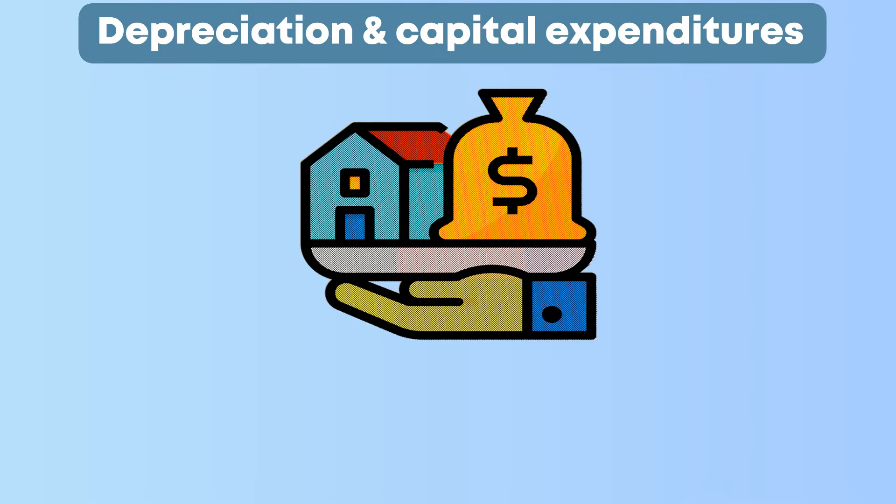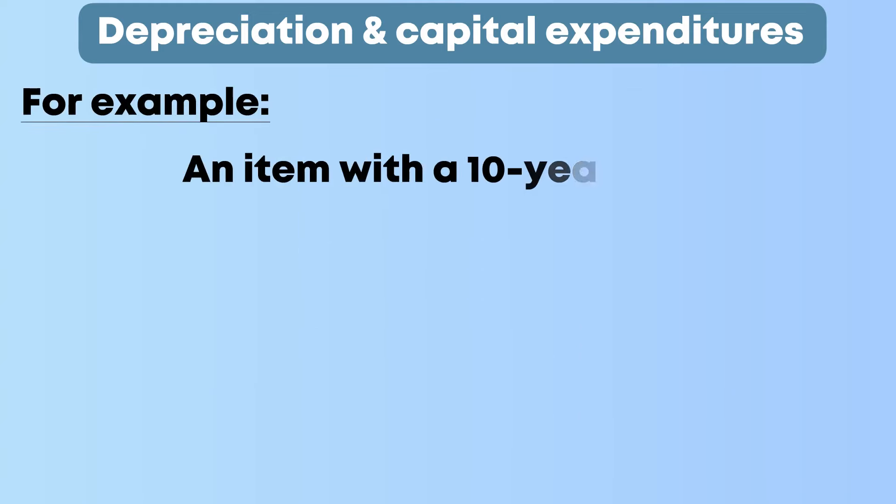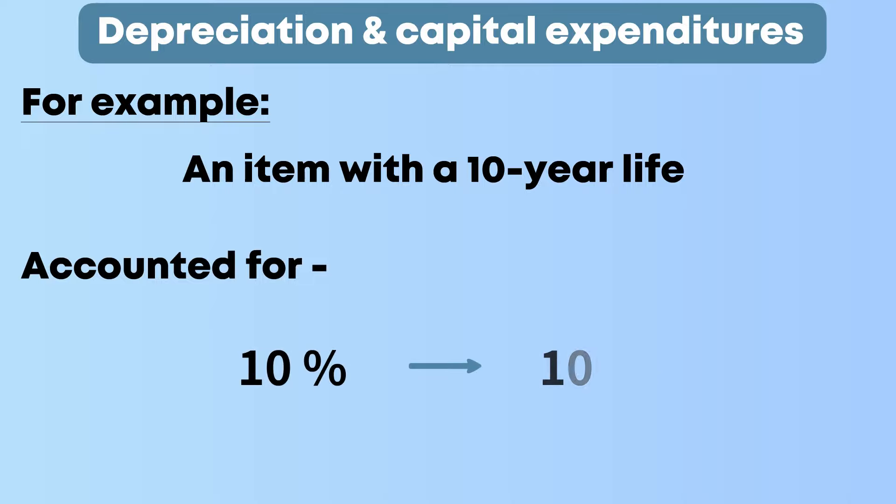Costs of major asset acquisitions are accounted for over the entire life of the asset. For example, an item with a 10-year life is accounted for at 10% for 10 years.